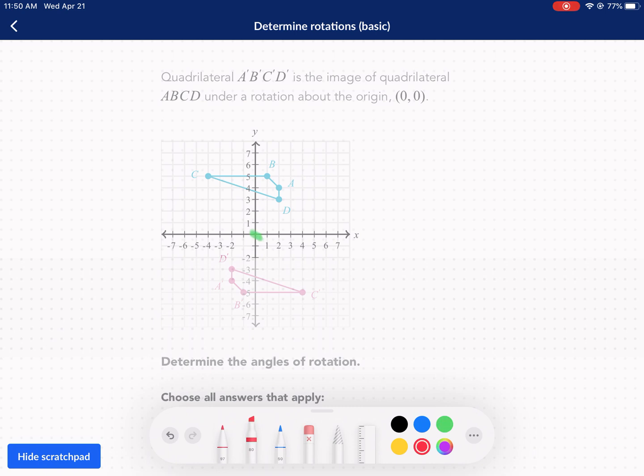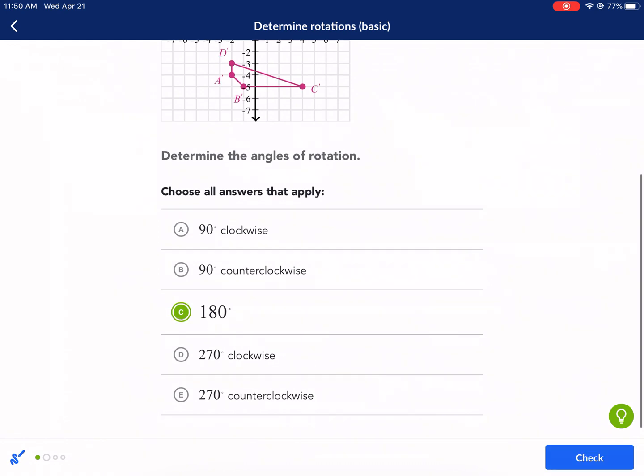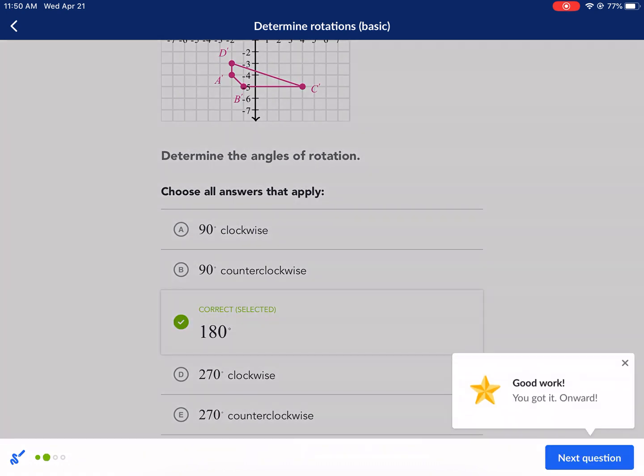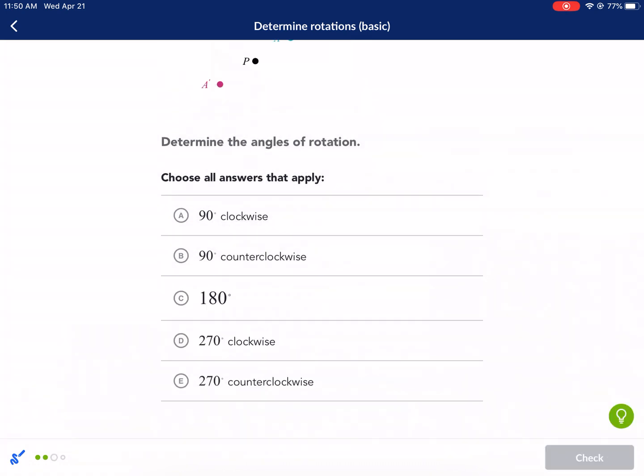And then we're going to draw a line connecting to the points that are being rotated. For example, C and C prime, I'm going to look at those ones. So I'm going to connect C, and then I'm going to connect C prime. And you can see that it's a straight line in between those two. That means it's 180 degrees. So that's a clear indication. If straight line, 180 degrees, that's how there's no clockwise or counterclockwise, because you get to the same spot.